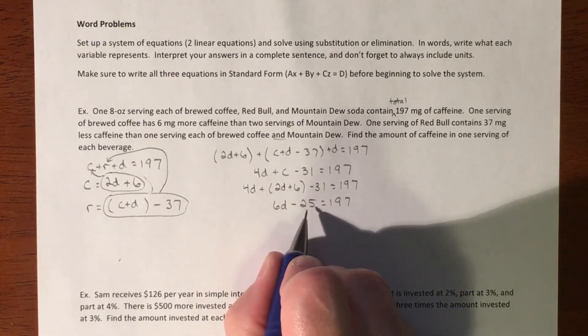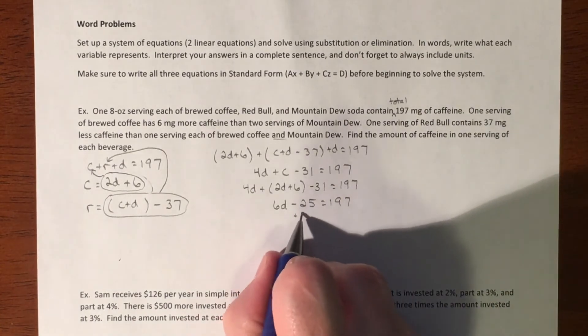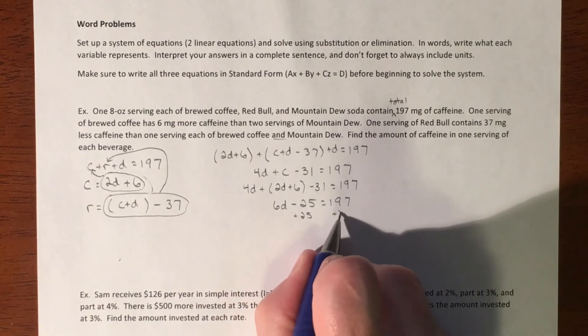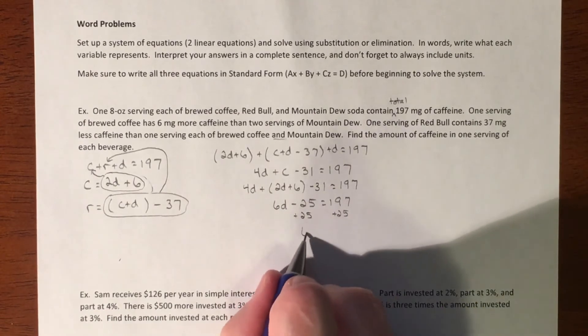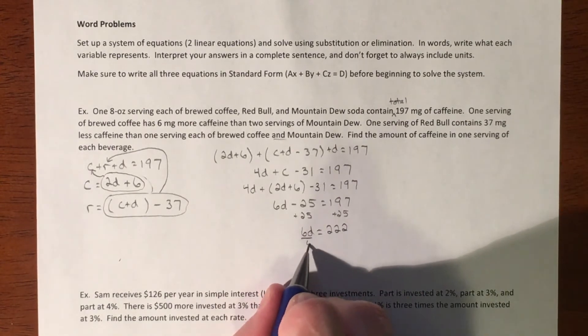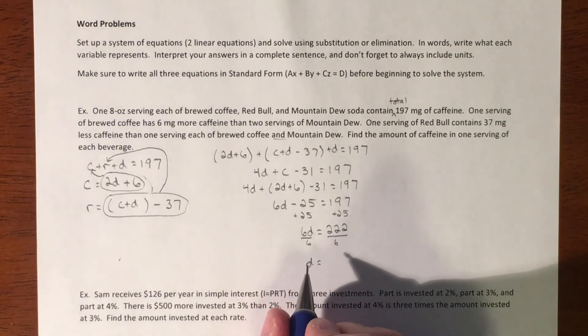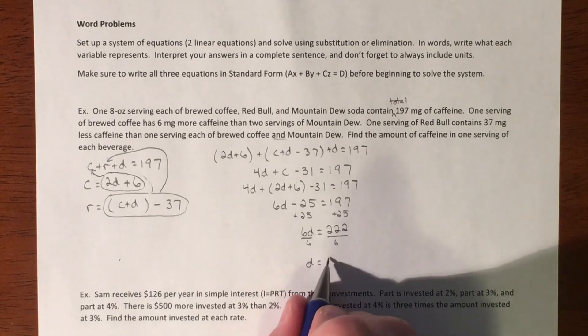Finally, we can now figure out what D is going to equal. So if we add 25, you got 6D equals 222 divided by 6. D equals 222 divided by 6. D equals 37.